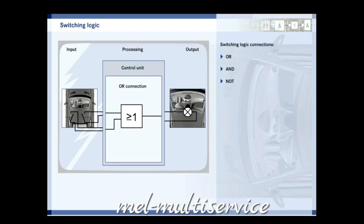The signal from the door contact switch on the left, OR the one on the right, determines the state of the interior lighting. Try the circuit out here.